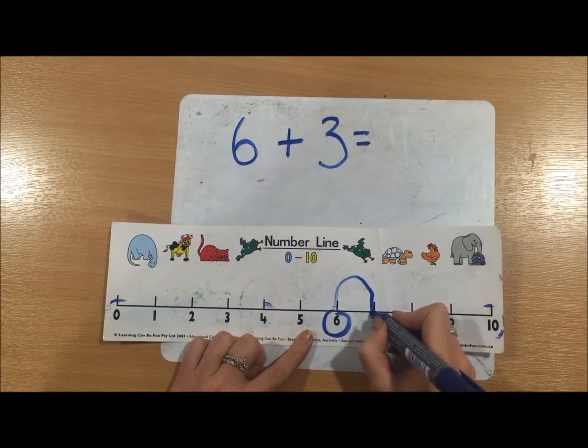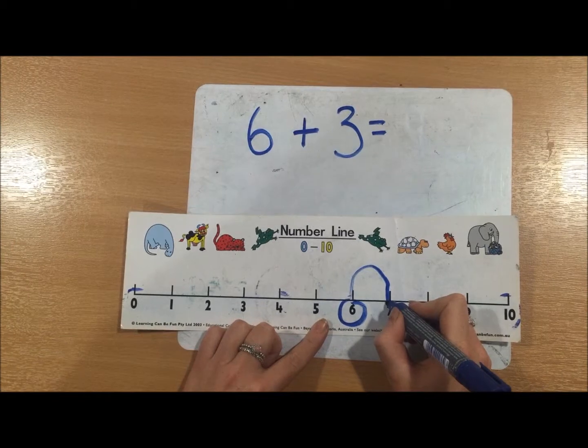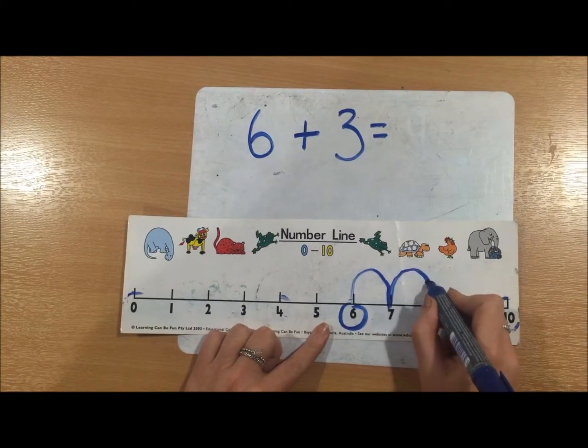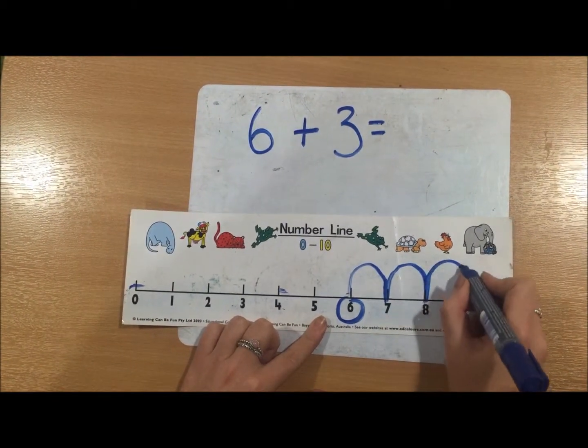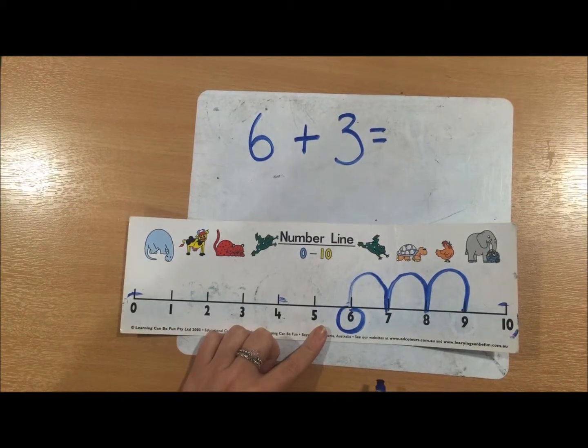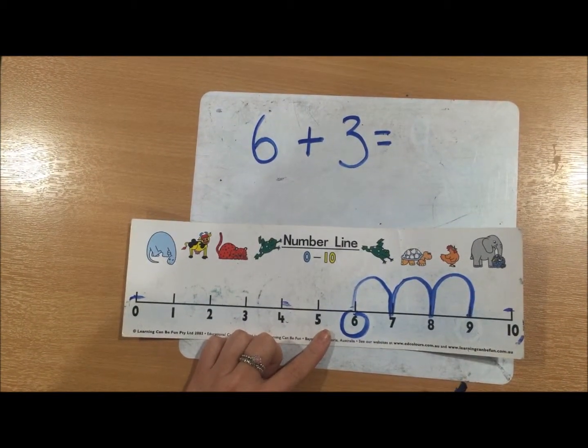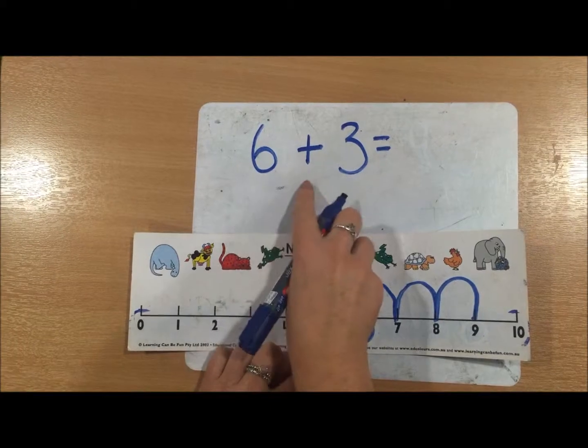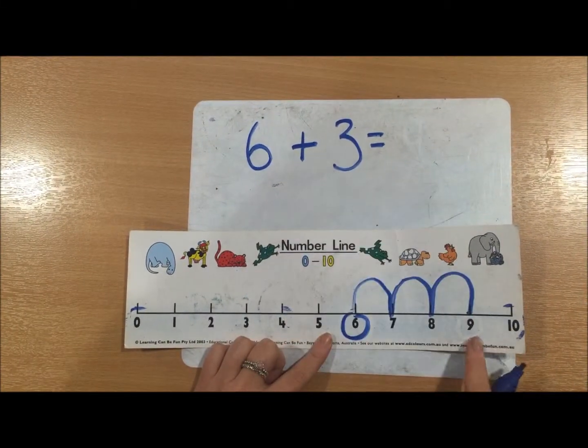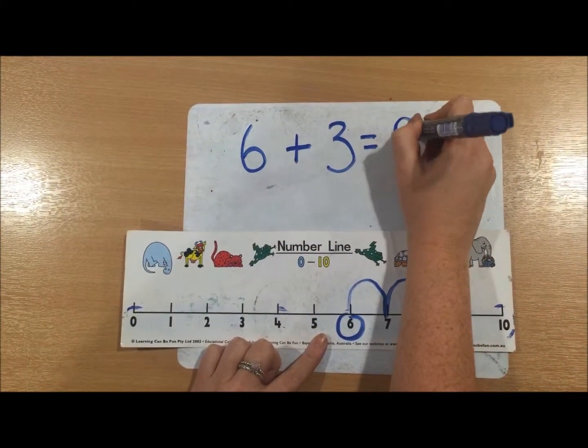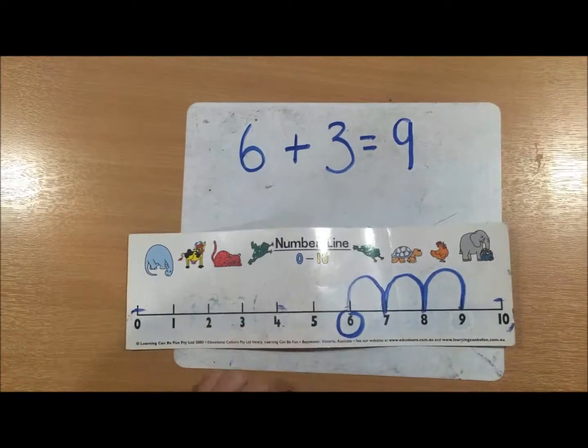One and remember we count the jumps not the numbers. Two, three. The number what you land on is the answer. So six add three equals nine and that's how you add.